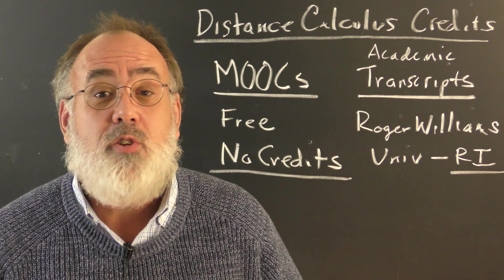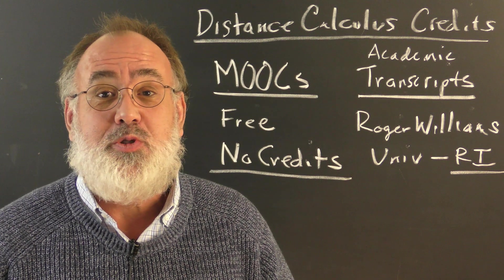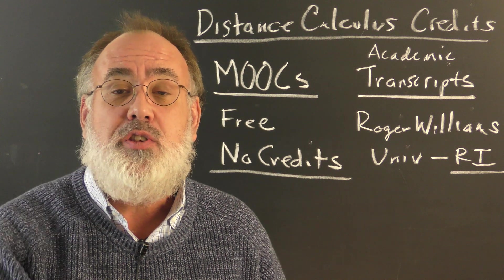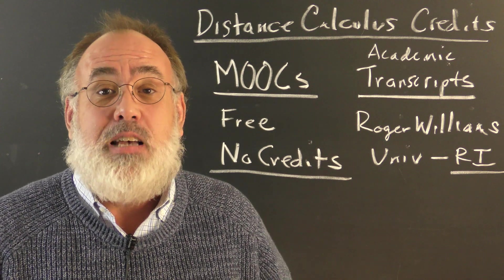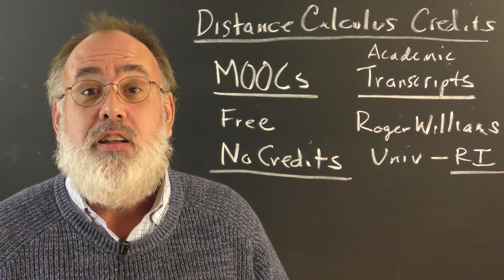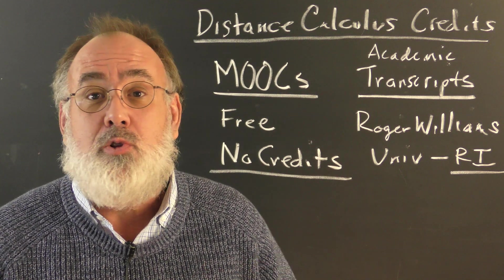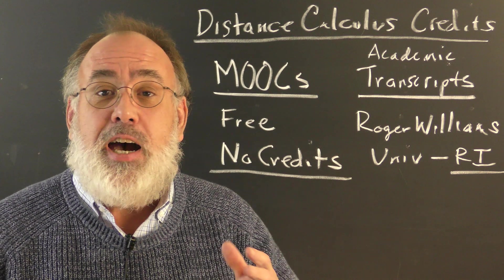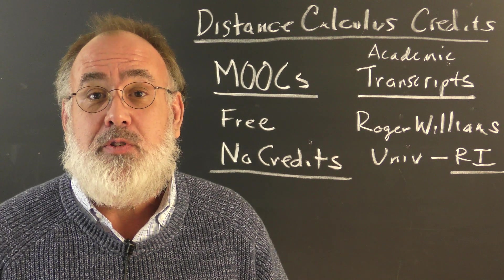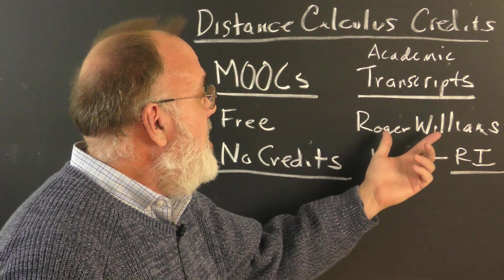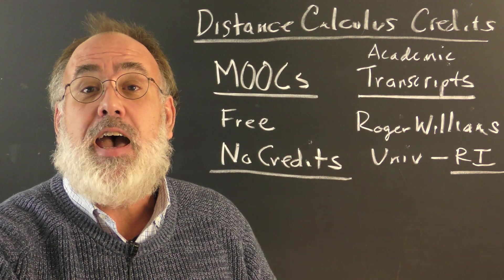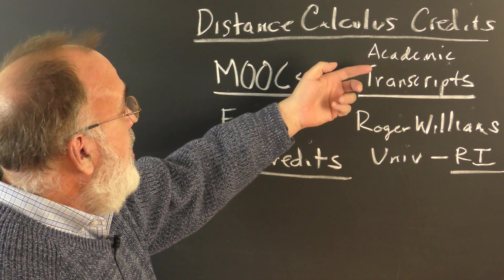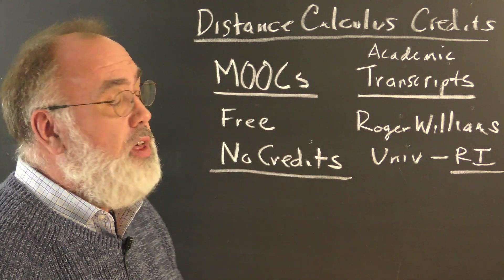It's very important that if you're based in the United States that you see credits from a United States-based school. There are great schools around the world, fantastic schools of course, but trying to transfer credits from a foreign university into the United States, sometimes it's okay and sometimes it's not. If you went to Berlin Polytechnic, you're probably going to have an easier time transferring those credits into another degree program, but you have to watch out for this stuff. There are some online courses that operate through universities that are outside the U.S. It's important to choose a U.S.-based university to do an online calculus credit course.